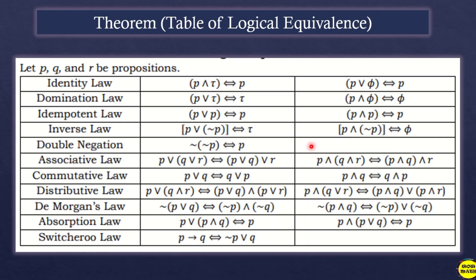There are different theorems — also called the Table of Logical Equivalences. These will also be covered in our upcoming examples. The laws we can use as a guide include: Identity Law, Domination Law, Idempotent Law, Inverse, Double Negation, Associative Law, Commutative Law, Distributive Law, De Morgan's Law, Absorption Law, and the Switcheroo Law. We use two symbols: one for conjunction (and) and one for disjunction (or).